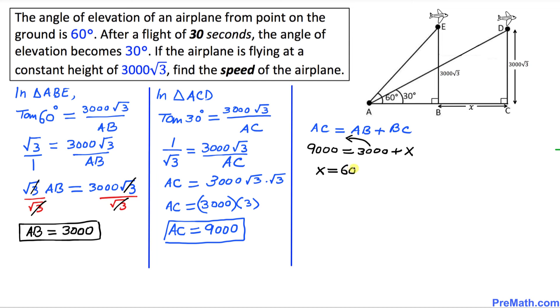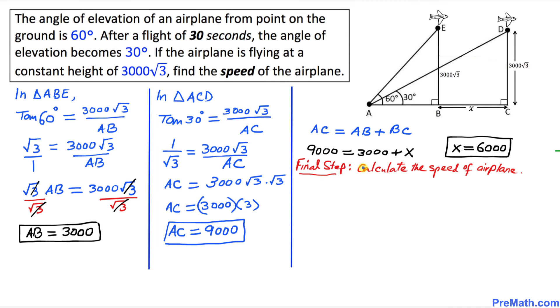In our final step, we are going to calculate the speed of this airplane using the formula: speed equals distance divided by time. In our case, the distance is 6000 divided by the time, which was 30 seconds.